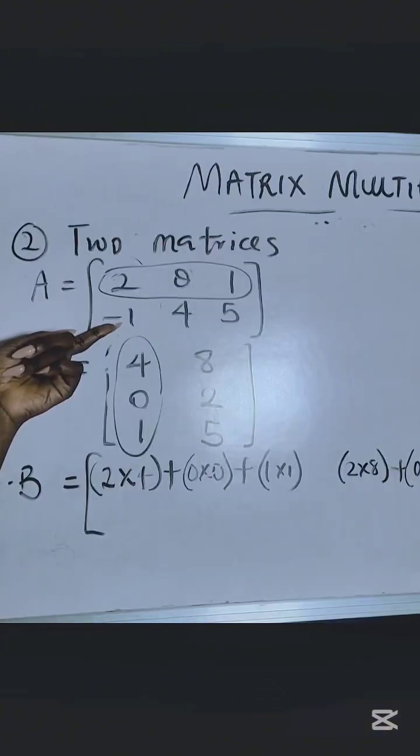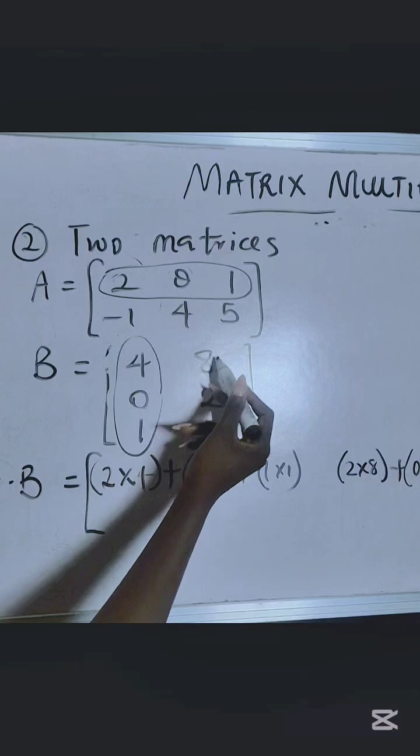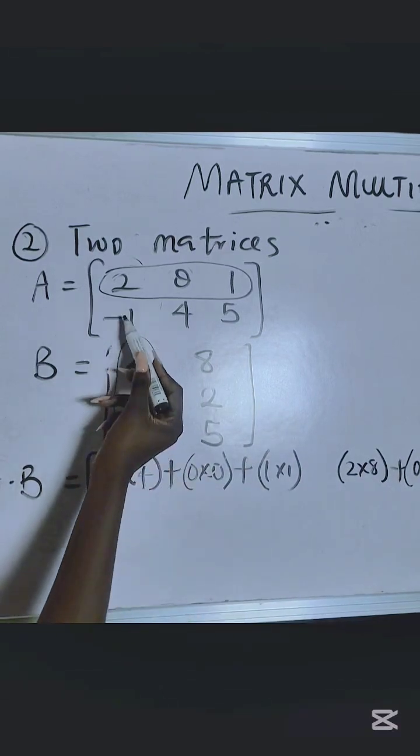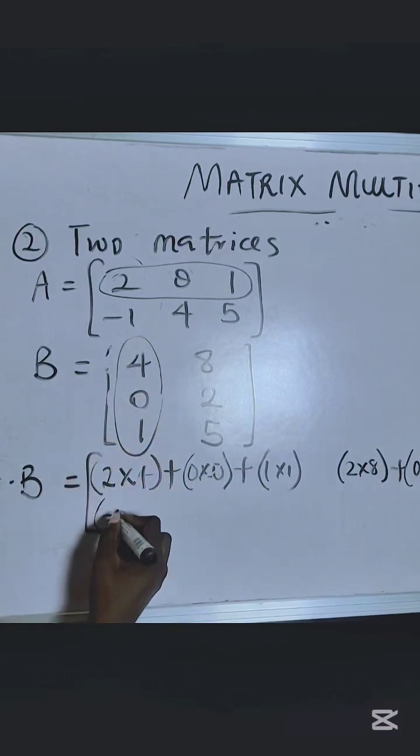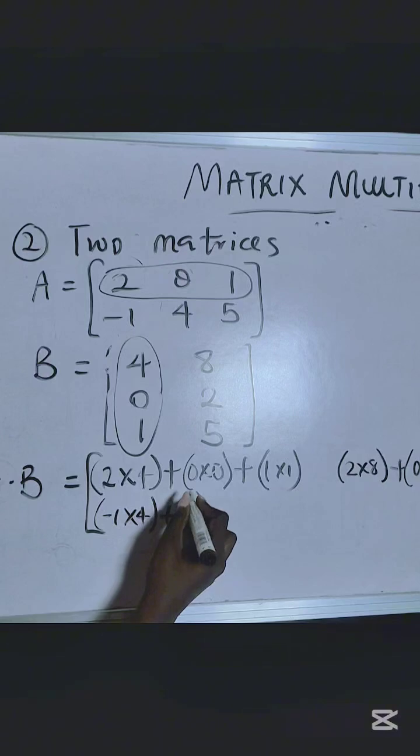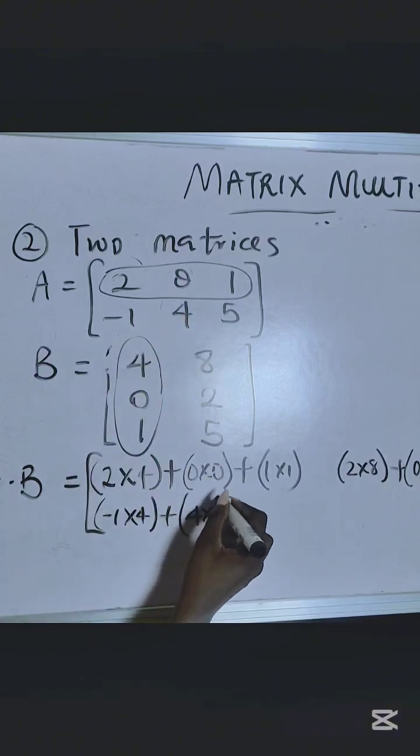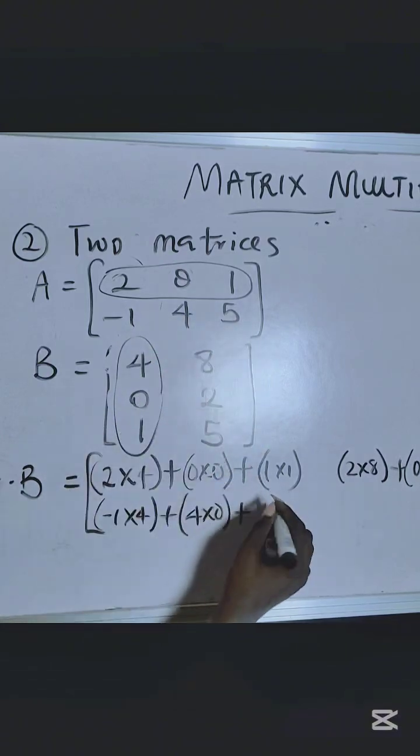Do the same thing for the second row. You use this one to multiply this second matrix. So minus 1 times 4 plus 4 times 0 plus 5 times 1.